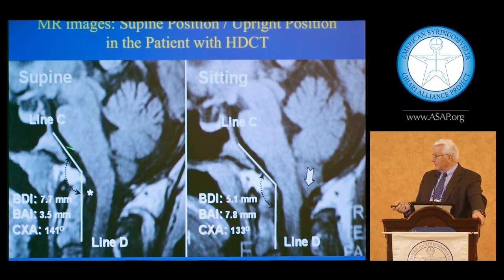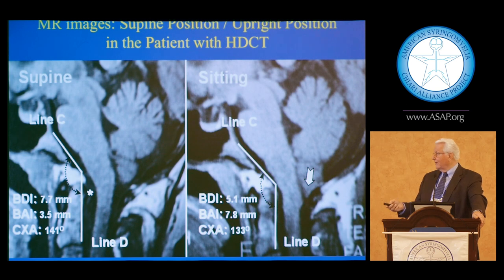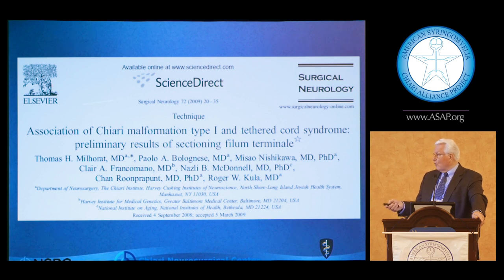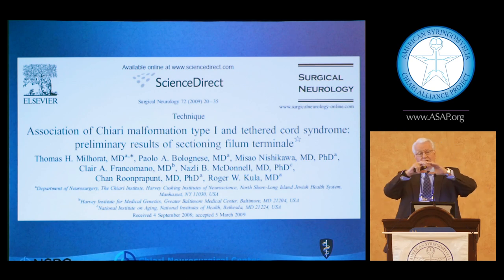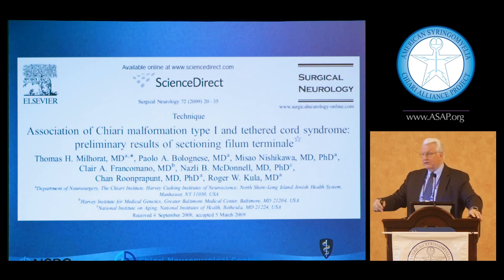In some imaging studies, we can see that when a patient stands up they have an increase in the clival axial angle because of laxity, and there's actually a downward shift on upright posture of the tonsils — as was demonstrated yesterday in additional imaging. There's also the issue of tethered cord problems, which we understand may be part of the evolution of neural tube formation and the development of spinal elements from the skull to the sacrum.